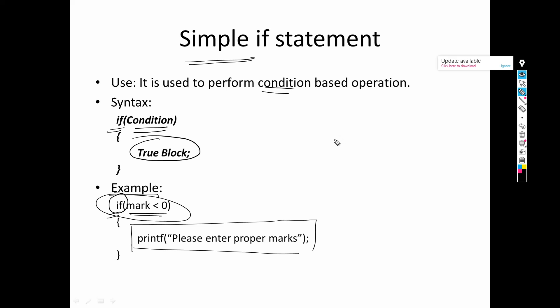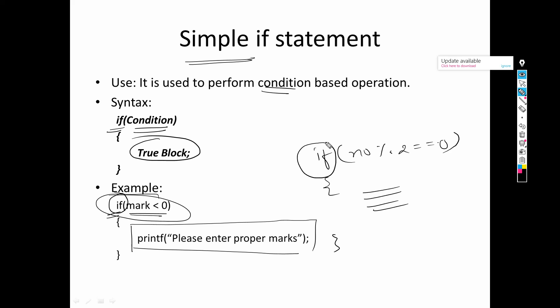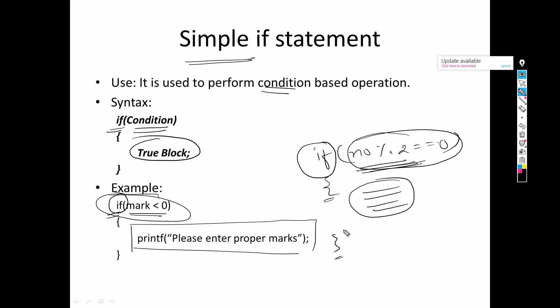Another example: I need to check or perform an operation only if the number is even. So I write: if number modulo 2 gives 0, then I will perform the operation; otherwise I don't want to perform it. First speaking it in English: if the number is even, then do this type of operation. Now converting that to syntax: if the condition is true — meaning the number is even — the statements within these two braces will be executed.